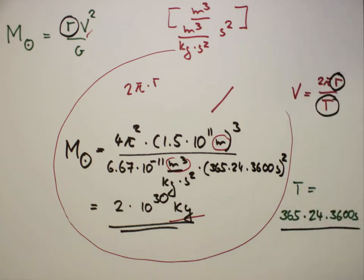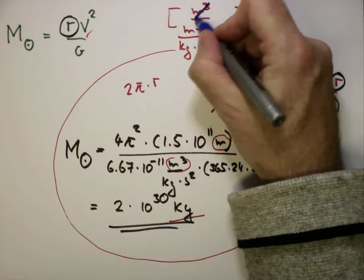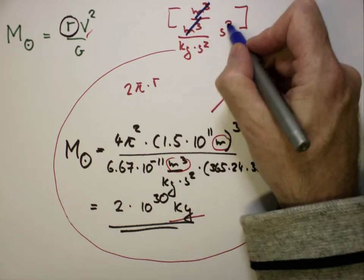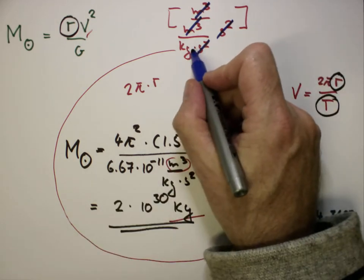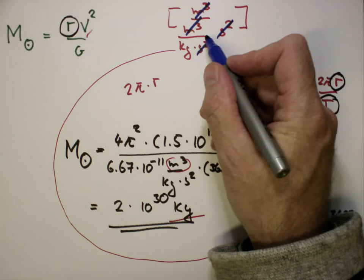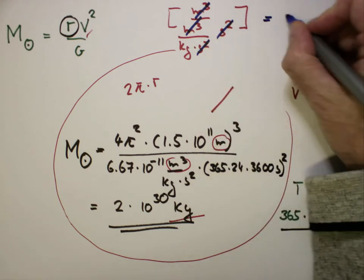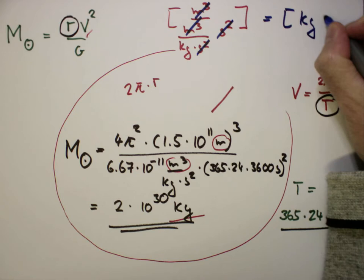If we cancel appropriately, this cancels, this cancels with that, and because the kilogram is in the denominator, it moves up, so that we obtain kilogram.